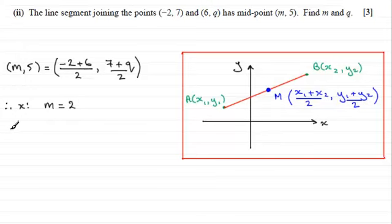When it comes to looking at the y coordinate, we've got 5 here then equals (7 + q) over 2. And if we multiply both sides by 2, we end up with 10 equals 7 + q. And then obviously if we take 7 from both sides, q will equal 3. Okay, so m equals 2, q equals 3.